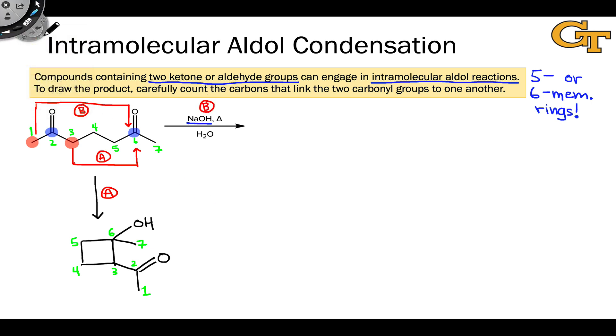If we draw the product of this process we see that we now are forming not a 4-membered ring but a 6-membered ring. The product we would end up with is this. And let's again number the carbons.